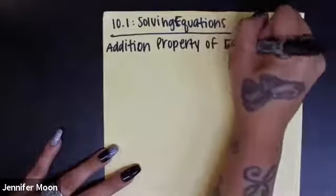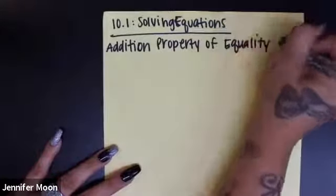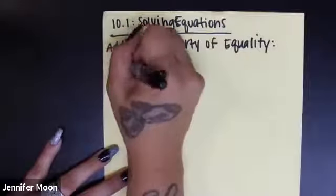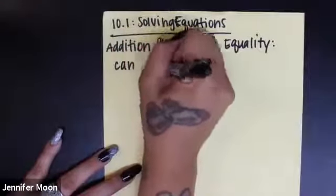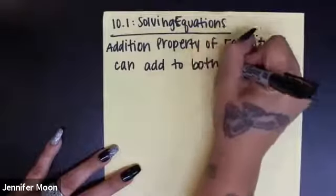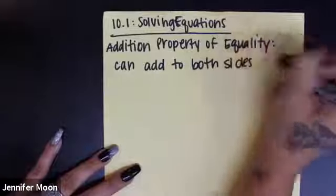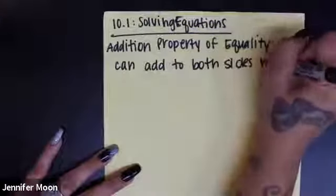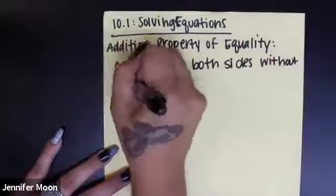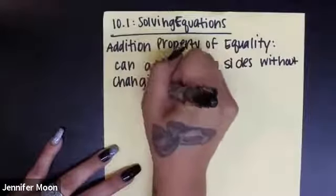So we have an addition property of equality and technically all this just states that we can add to both sides without changing the equation.